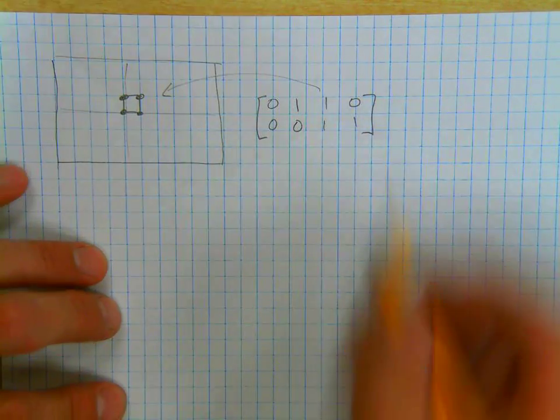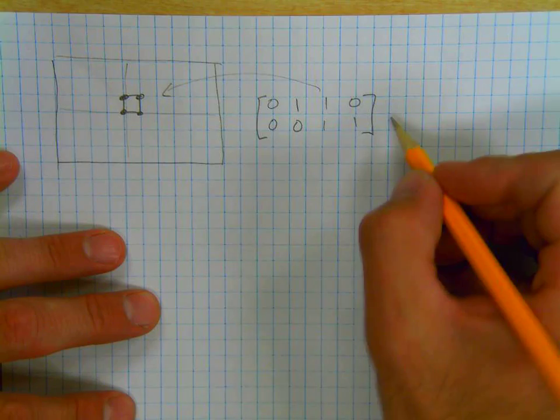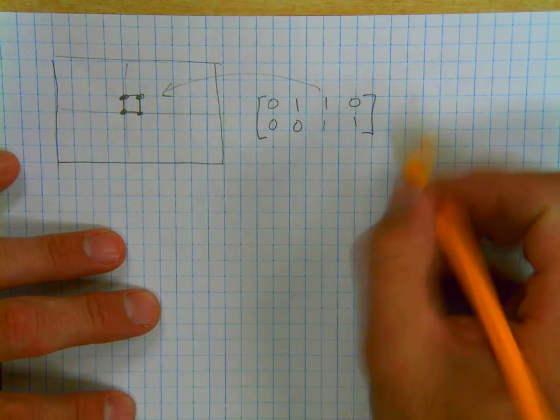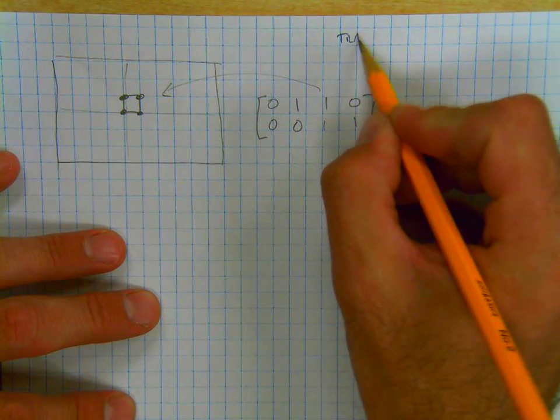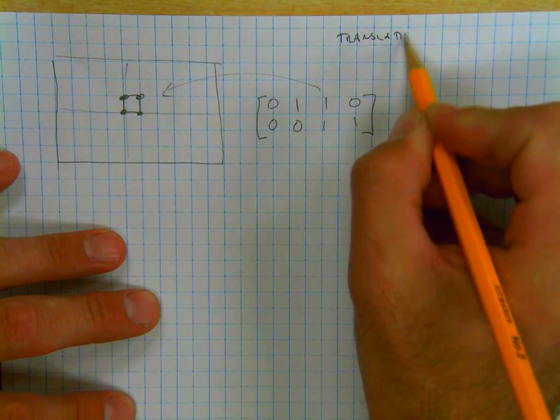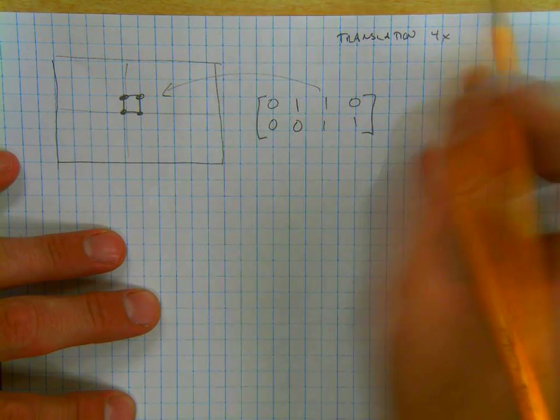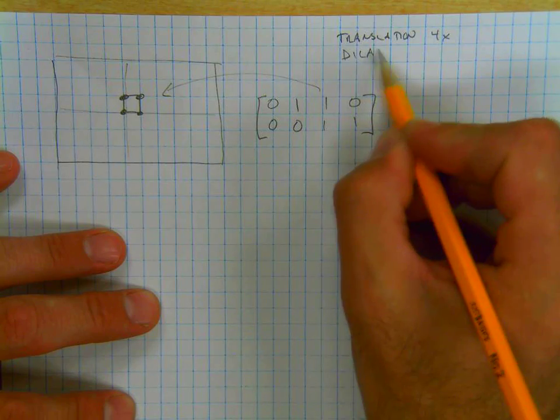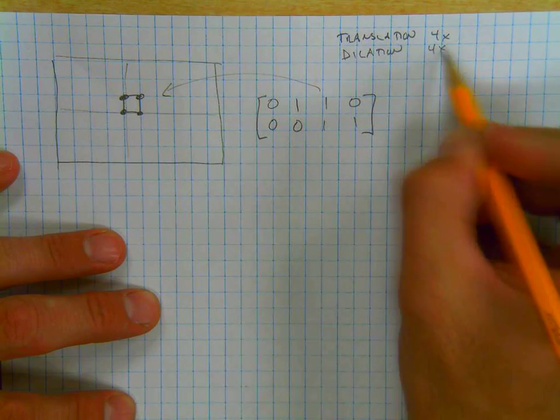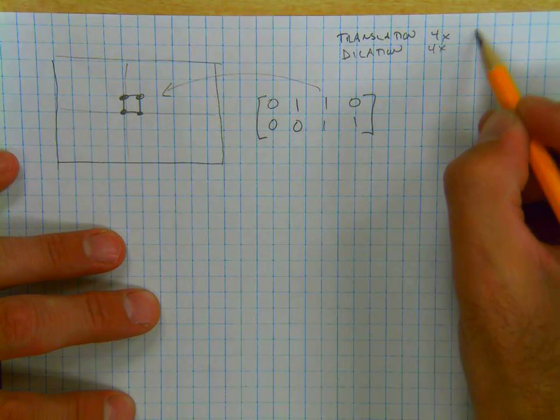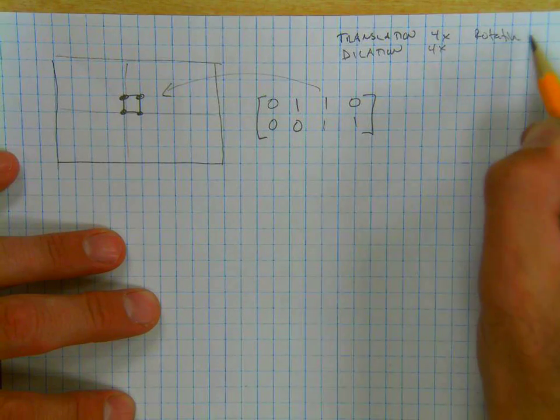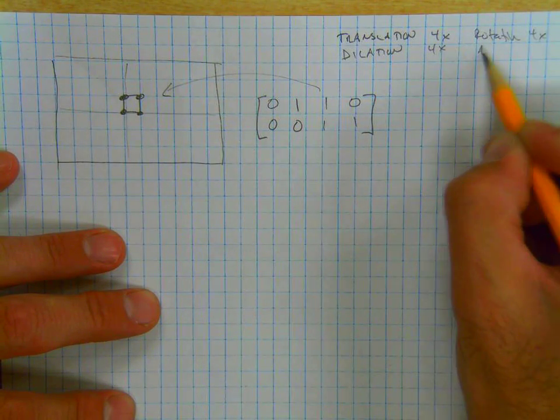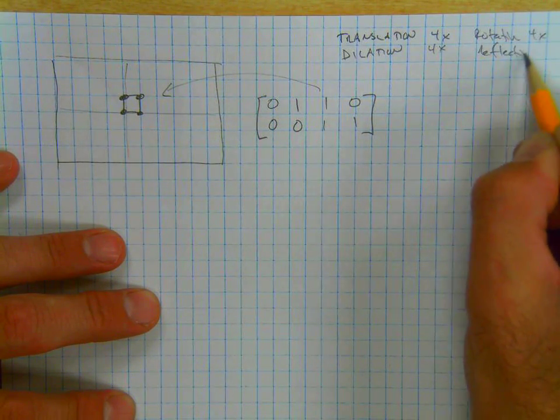Then what you're going to do is do something to this. The things that you're going to do to it are translation, and you're going to do that at least four times. You're going to do a dilation at least four times, a rotation at least four times, and a reflection at least four times.